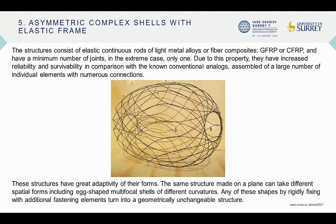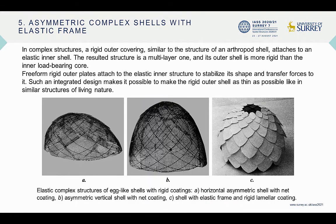Only one joint in the extreme case. Due to this property, they have increased reliability and survivability, and great adaptivity of their forms. In complex structures, a rigid outer covering similar to the structure of the Afropods shell attaches to an elastic inner shell.